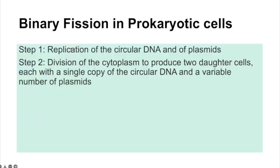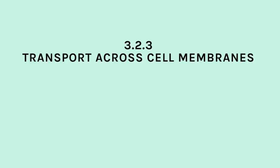Prokaryotic cells don't go through mitosis. Instead they undergo binary fission: first the circular DNA and plasmids are replicated, then the cytoplasm divides to produce two daughter cells, each with a single copy of the circular DNA and a variable number of plasmids. Viruses are non-living so don't undergo cell division — instead they inject their nucleic acid into the host, and the host cell replicates the virus particles.